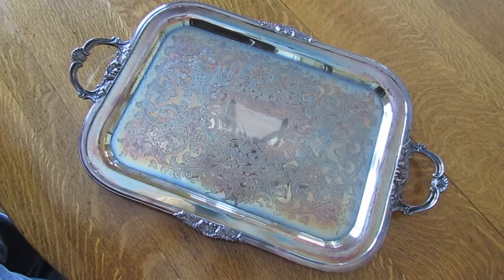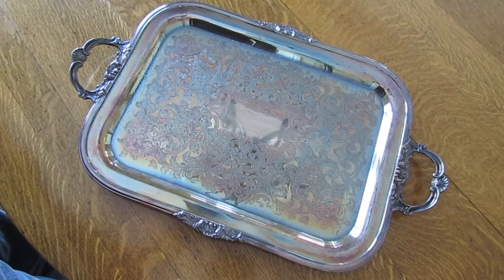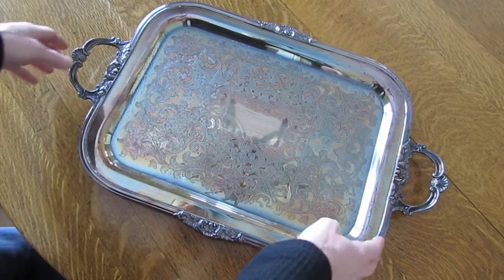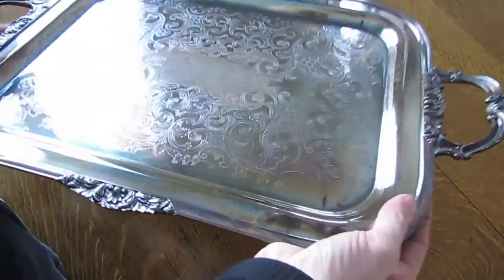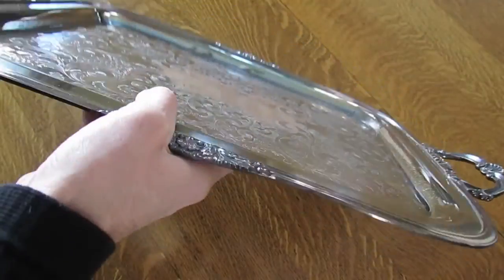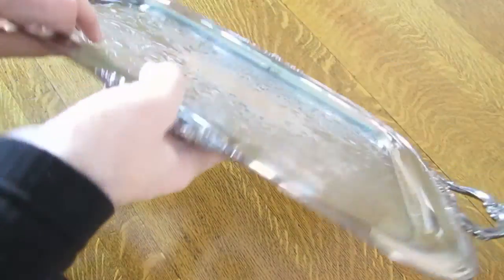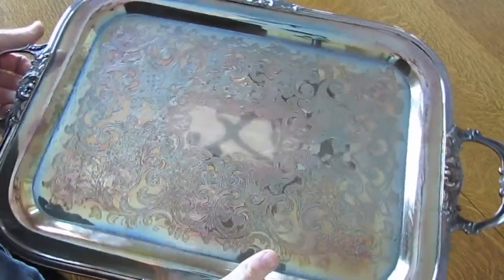Hello everyone. Today I want to show you how to hang a heavy object on the wall. Now I've got this metal tray here. This one weighs about four to five pounds, and it's kind of a nice looking tray. So we want to put this on the wall.